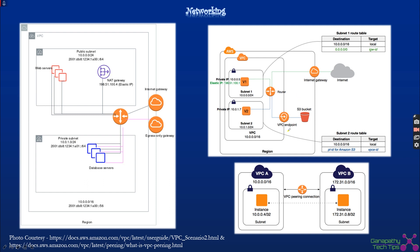The diagram also shows the VPC Endpoint — communication from EC2 to S3 happens using AWS PrivateLink instead of going through the internet, enabled using VPC Endpoints. For VPC Peering, VPC A and VPC B are peered and can communicate with each other using a peering connection.